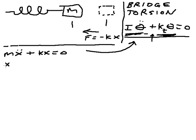Divide through by mass, and we come up with this equation. We're going to call the square root of k over m omega. We'll see why in just a second.